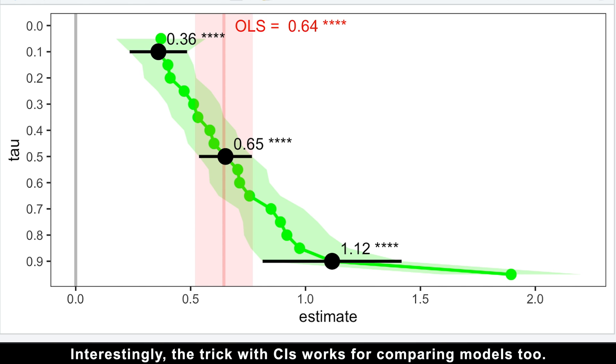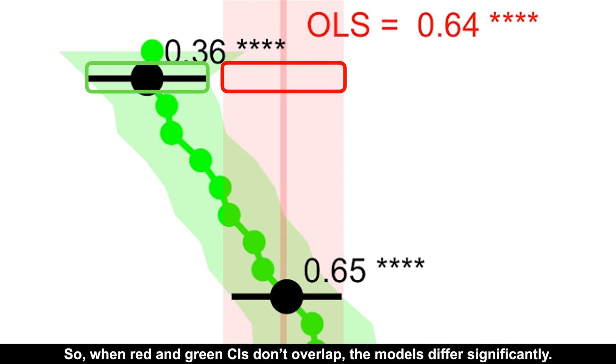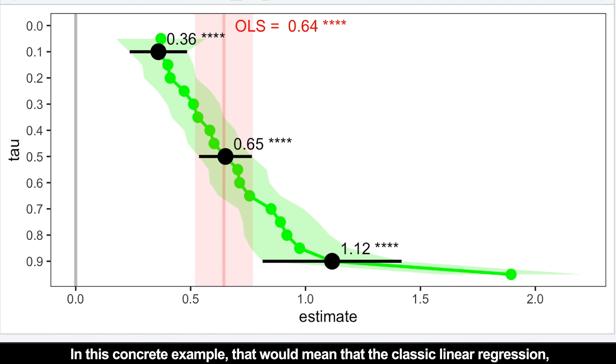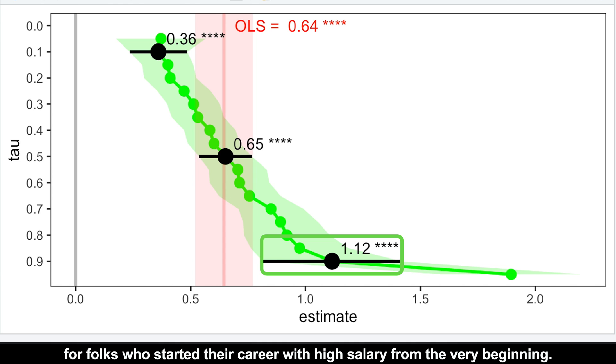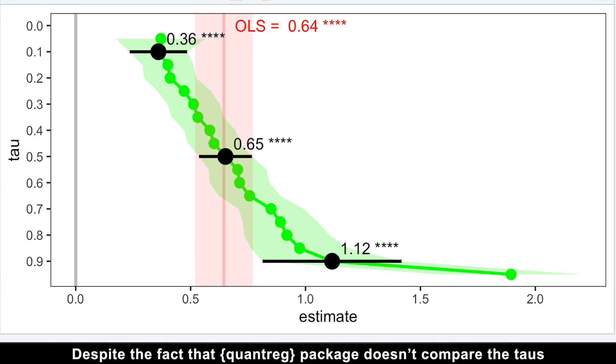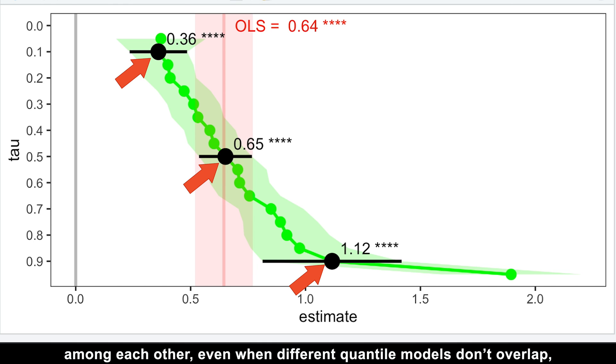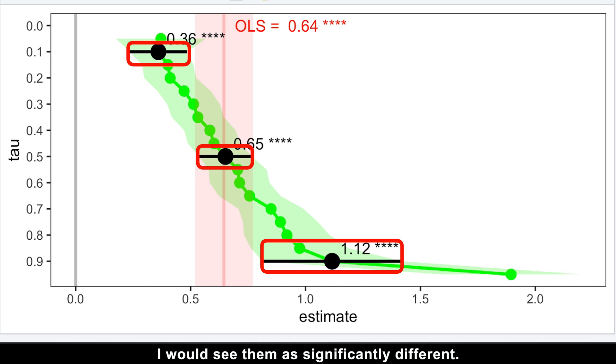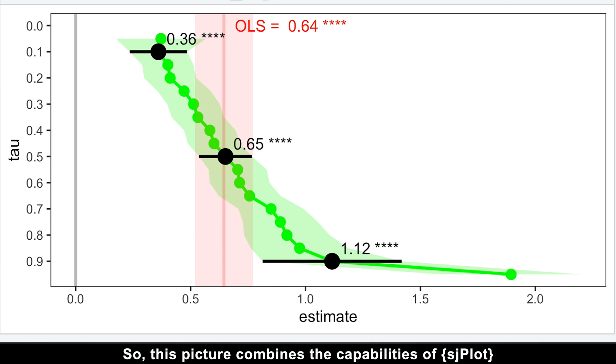Interestingly, the trick with confidence intervals works for comparing models too. So when red and green confidence intervals don't overlap, the models differ significantly. In this concrete example, that would mean that the classic linear regression, which says that the increase in age of one year would increase the salary by $640 on average, over-promises wage rise for low earners and under-promises for folks who started their career with a high salary from the very beginning. Despite the fact that the quantreg package doesn't compare quantiles among each other, even when different quantile models don't overlap, I would see them as significantly different.